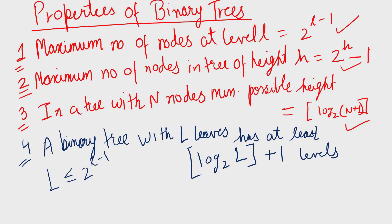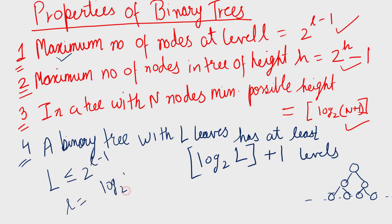All the leaves are going to be at the last level. If we assume all leaves are at this last level, then the number of leaves is going to be less than or equal to 2 to the power L minus 1. Using this property and solving it, since the number of levels and number of leaves are integers, we get L equals the greatest integer expression — giving us the minimum number of levels.